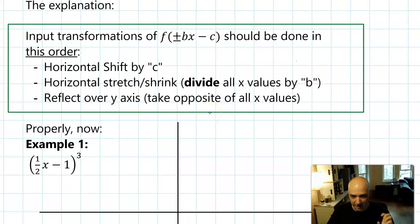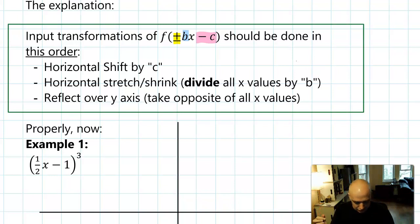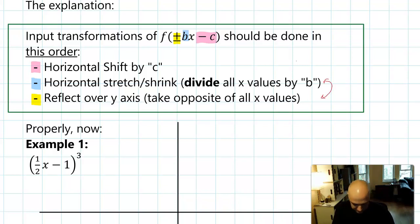Here's why that graph moved to an unexpected place. When you have an input transformation and you have a plus or minus, a coefficient, and a shift, you should do them in this order: horizontal shift first, then you can do the stretch or shrink, and then the last thing you do could be the reflection. It's technically true that you can do these two steps in either order, but it's really important that the shift happen first.